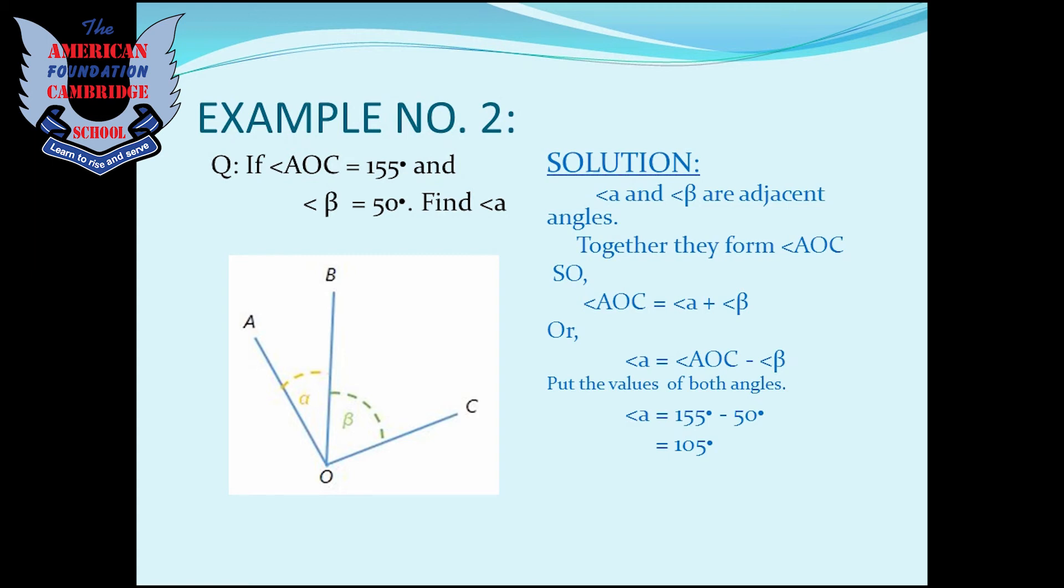Solution: Angle A and angle B are adjacent angles and together they form angle AOC. So angle AOC is equal to angle A plus angle B. But here you have to find angle A, so subtract angle B from angle AOC to get angle A. After subtracting the values, angle A is 105 degrees.